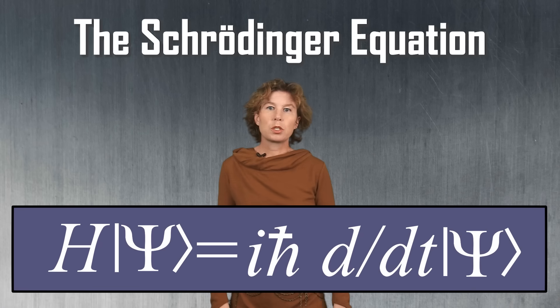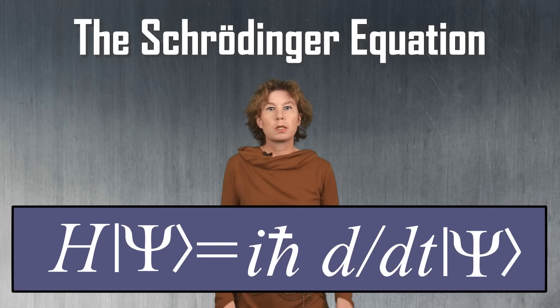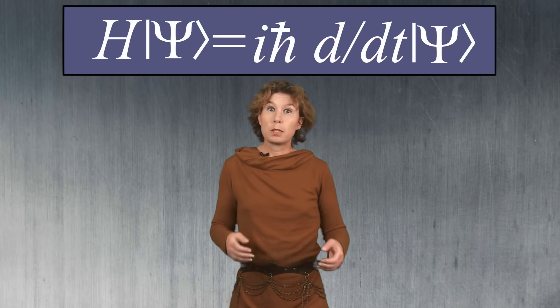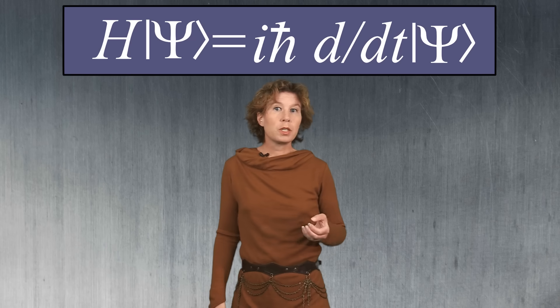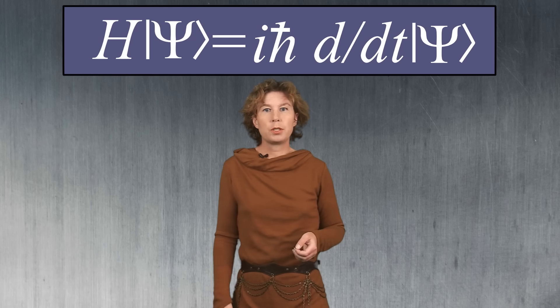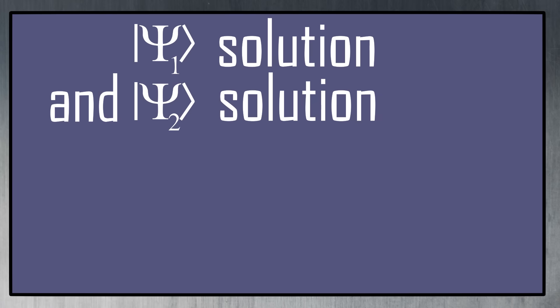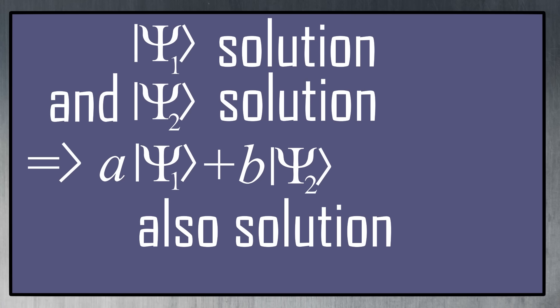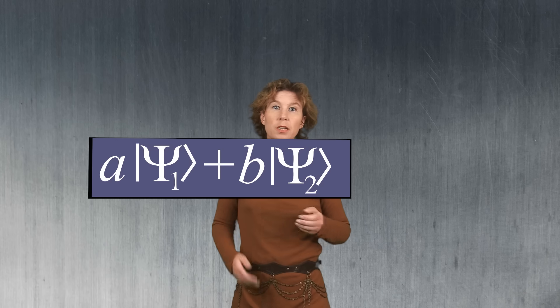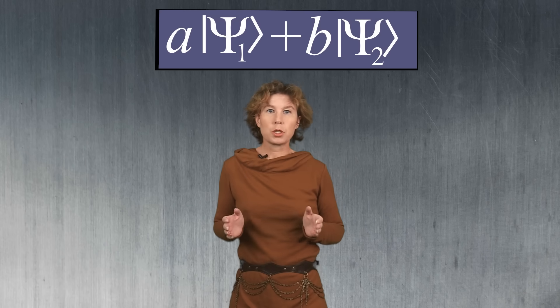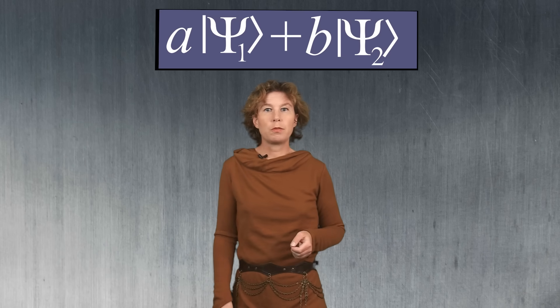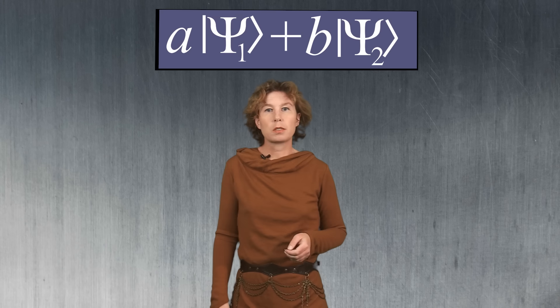Exactly how this equation looks like is not so important. The important thing is that the solutions to this equation are the possible things that the system can do. And the Schrödinger equation has a very important property: if you have two solutions to the equation, then any sum of those two solutions with arbitrary pre-factors is also a solution. And that's what is called a superposition — it's a sum with arbitrary pre-factors. It really sounds more mysterious than it is.